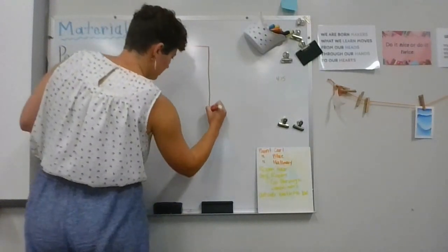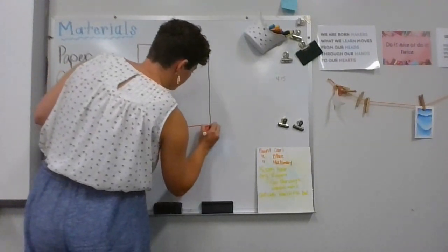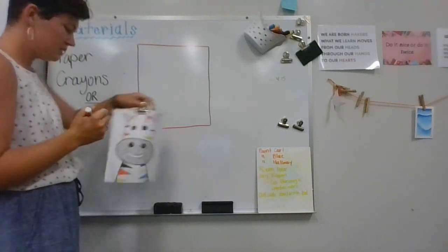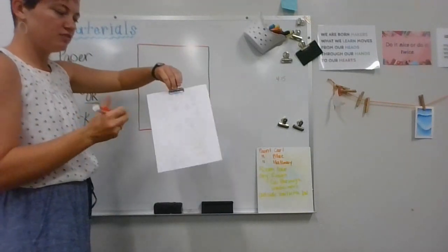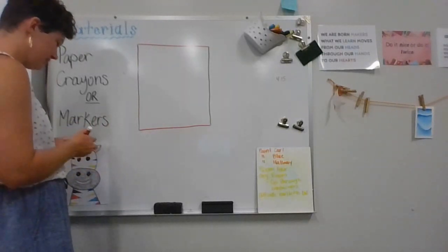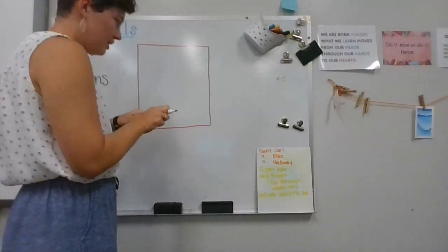Before we start though, we are going to practice on the back of your piece of paper. So I've got my zebra on this side. I would flip it over and I'm going to draw on the back. We're going to practice our shapes because our zebra is made out of a lot of shapes.